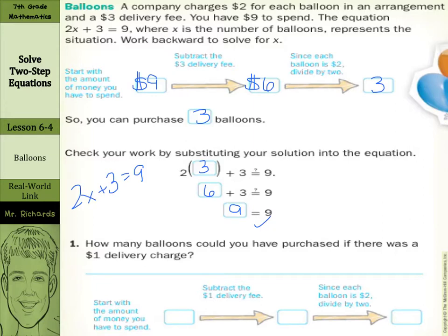Our question: how many balloons could you have purchased if there was a $1 delivery charge? Start with the amount of money you have to spend, which is $9. Subtract the $1 delivery fee. 9 minus 1 is $8. And since each balloon is $2, divide by 2. 8 divided by 2 is 4. So we can purchase 4 balloons.